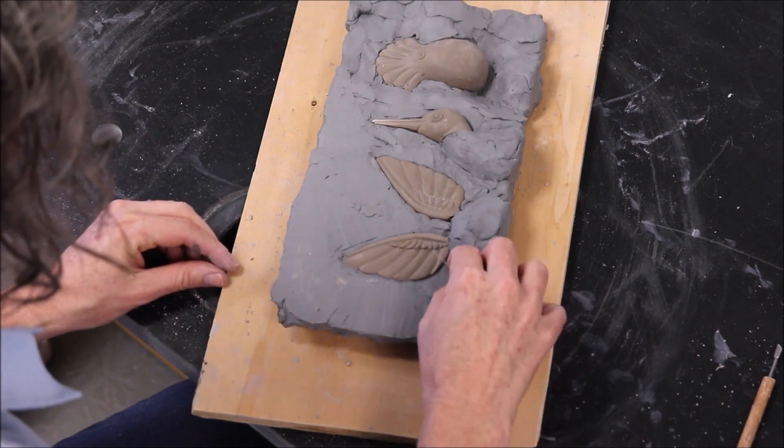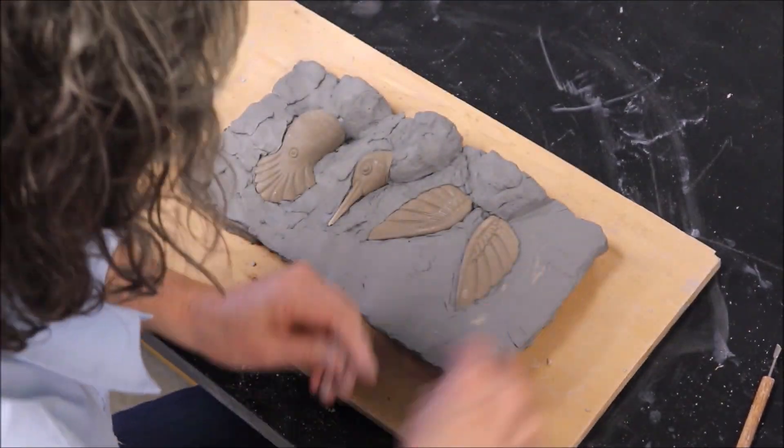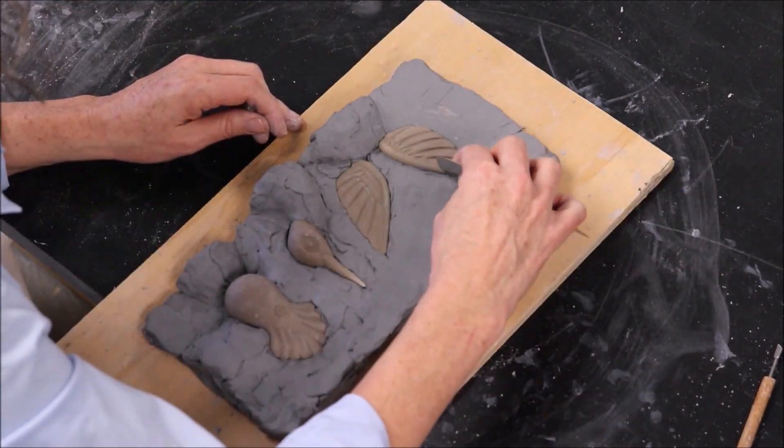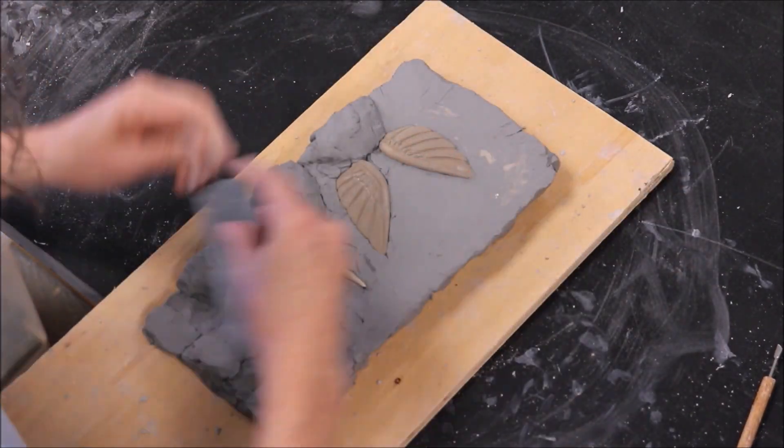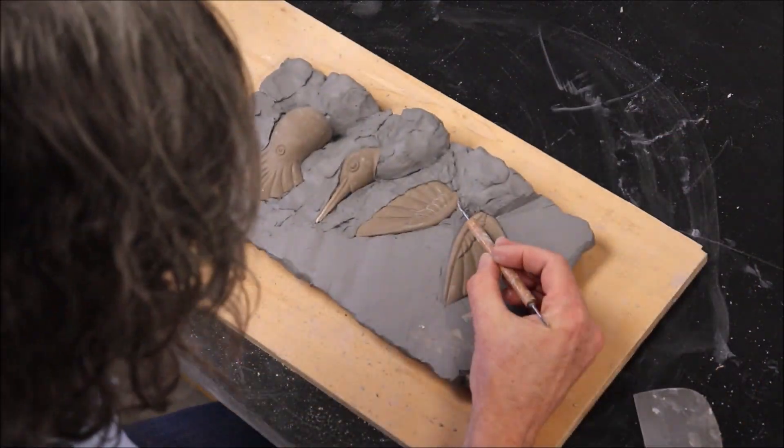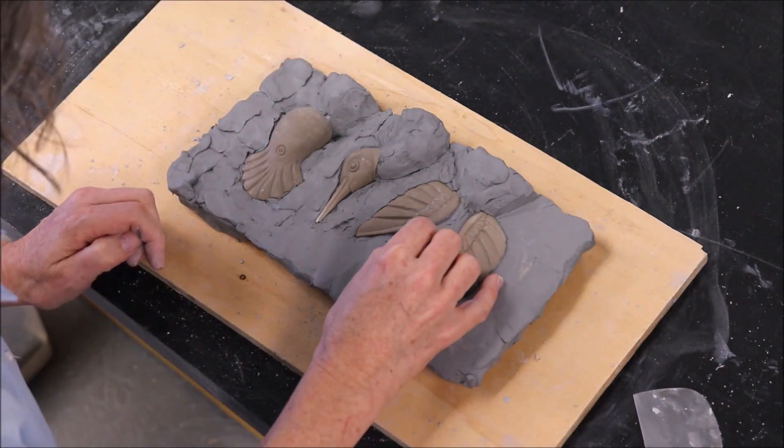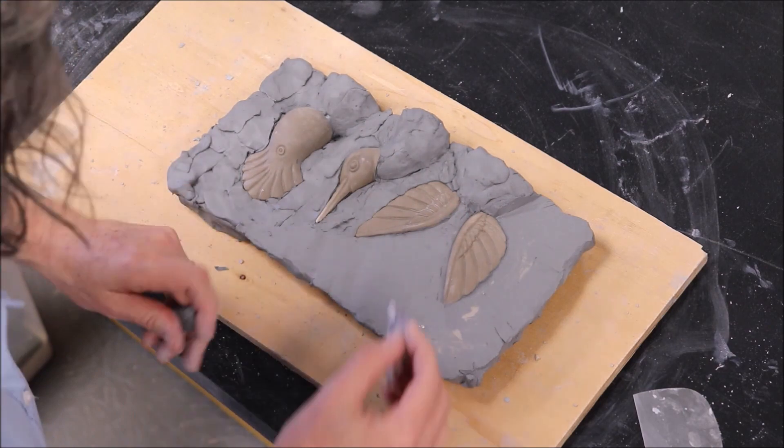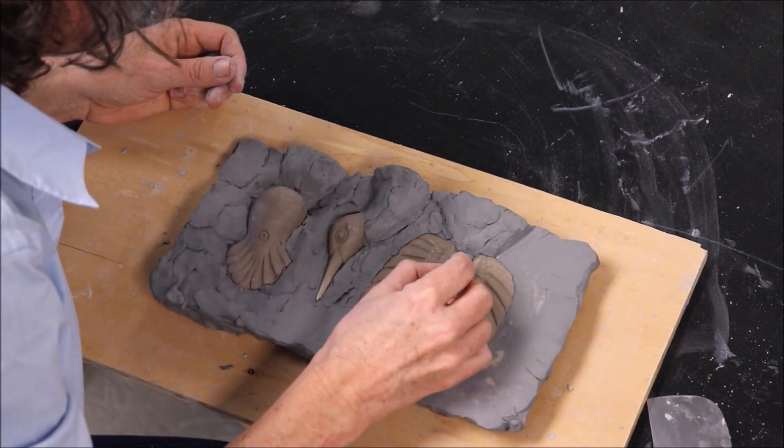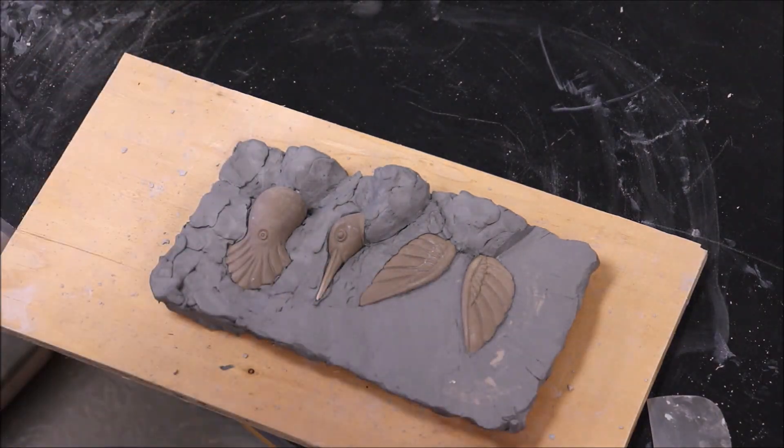I could potentially fire the piece first and then make a mold out of it, but that becomes a lot more difficult. Part of the problem is I have to make my dividing line perfect. It needs to be perfectly centered so I'm not creating any undercuts. If I don't quite get that dividing line perfectly right, it's just going to be more difficult to pull out of the mold. Generally, it's a lot easier to make a plaster mold from something that's clay.